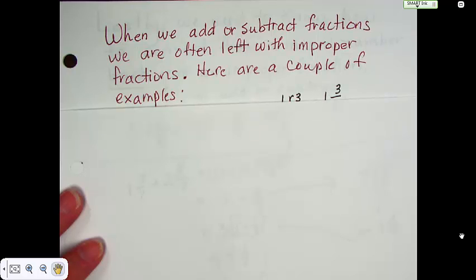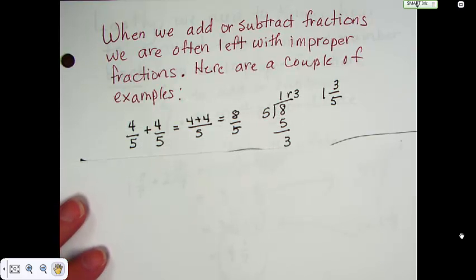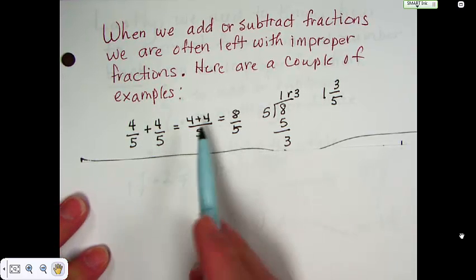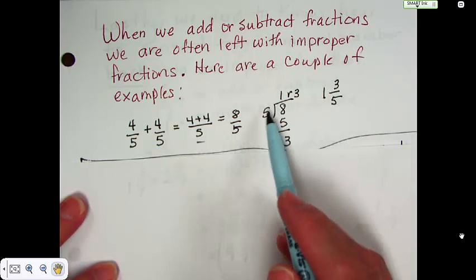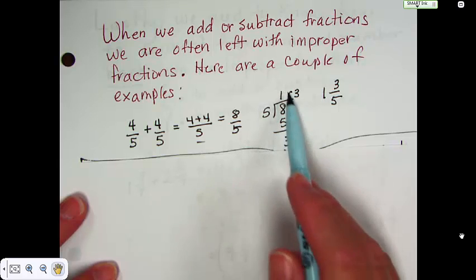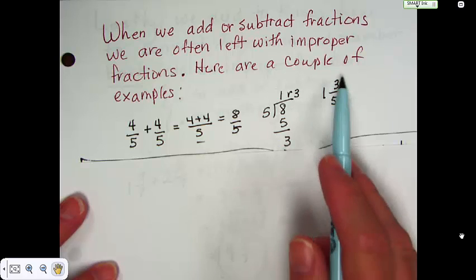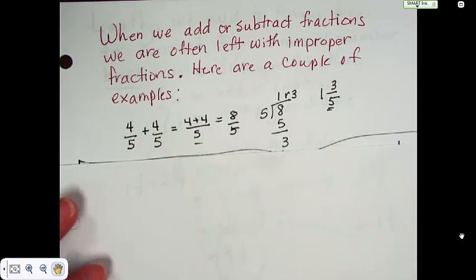So when we add or subtract fractions, we're often left with an improper fraction. So here's a couple of examples. We have 4 fifths plus 4 fifths. 4 plus 4 is 8 over 5. Of course, the denominator stays the same. You can take 8 divided by 5. You get 1 remainder 3 or 1 and 3 fifths. These are just examples. Please put them in your notes, though.